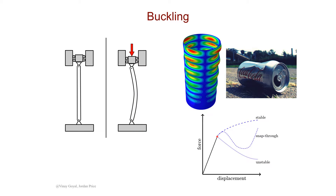Buckling is an instability that leads to structural failure. This behavior is characterized by a sudden sideways deflection of a structure under compressive stress. You're likely familiar with Euler's critical load formula for column buckling, but simple expressions unfortunately don't exist like this for complicated structures. However, failure modes for these structures can be found numerically using finite element software such as Abacus.